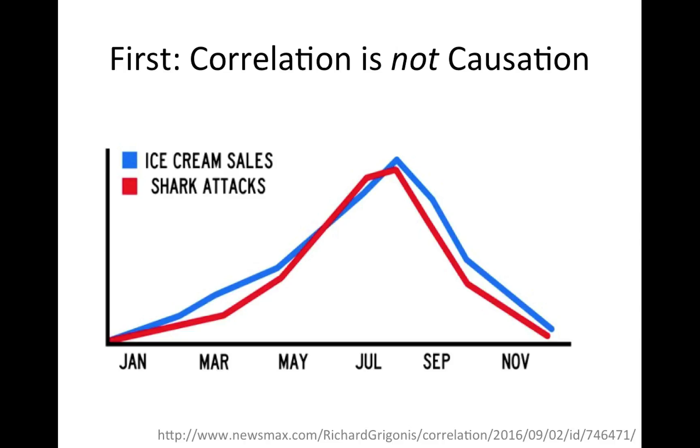Just to make sure we're all on the same page, correlation is not causation. Here we have shark attacks and ice cream sales - they increase in the summer, so shark attacks and ice cream sales would be highly correlated, but obviously ice cream doesn't cause shark attacks. Correlation does not imply causation. Linear regression models are correlations or partial correlations.